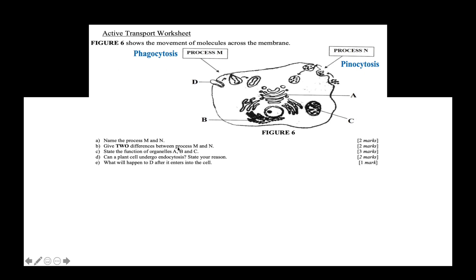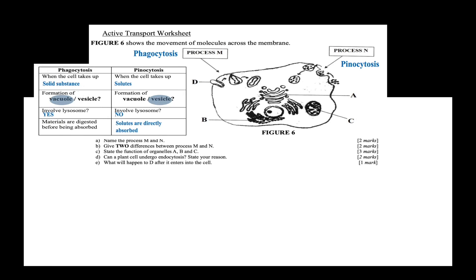Give two differences between process M and process N. It is important for students to know that you are not allowed to answer comparison questions by using a table — you need to write full sentences and make clear comparative sentences. You can ensure this by using words such as 'meanwhile,' 'but,' or 'however.' For example: process M is when the cell takes up solid substances, meanwhile process N is when the cell takes up solutes. Since there are two marks, you should give two differences.